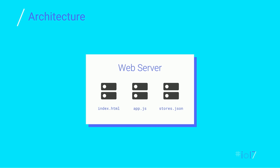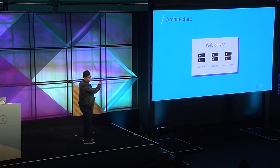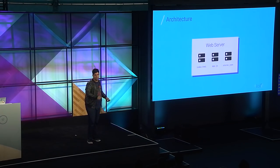The architecture for this example is really, really simple. We have three files sitting on a web server — this is the client-side-only code. We have the web page (index.html), a JavaScript file, and a JSON file that contains the data for the stores.